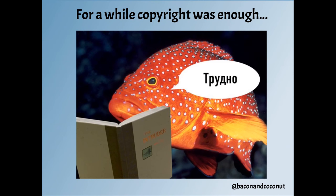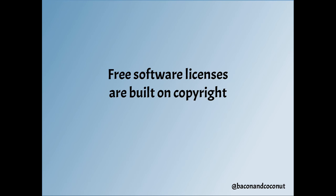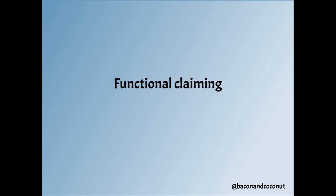For a while, that was enough. We thought: if you just copy my software, then you either interact with whatever terms I've set or you get default copyright. All of our free software licenses are built on copyright first and foremost, because in order to interact with the system that put them under default copyright, we had to invoke that copyright and then change it. That was okay for a while. But then about 15 to 20 years ago, people started patenting software — which, as we said, is not really like other things. It's written, but it's more like a set of instructions — it's supposed to have a function.